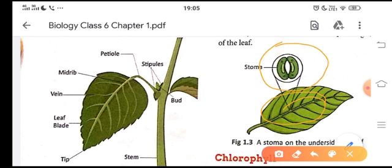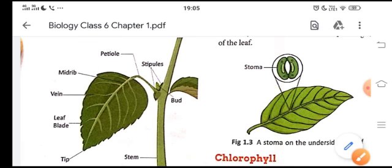The function of stomata is they help in the exchange of gases. Like oxygen is produced by the process of photosynthesis. So how does this oxygen come into the atmosphere? Through these small pores. Similarly, carbon dioxide which is present in the atmosphere is taken in by the plants. This carbon dioxide is coming inside the plant or the leaf through these stomatas.